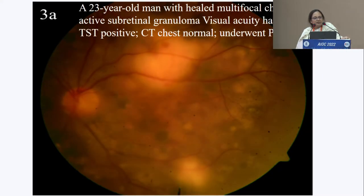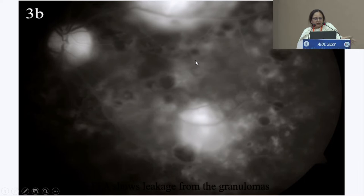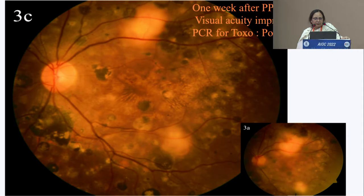This is an example of a 23-year-old man who came with healed multifocal choroiditis in one eye and an active granuloma. Visual acuity was hand motion, tuberculin skin test was positive, and CT chest was normal. He underwent a diagnostic vitrectomy. Fluorescein showed increased leak from the granuloma. One week after vitrectomy, his vision was improving on ATT.